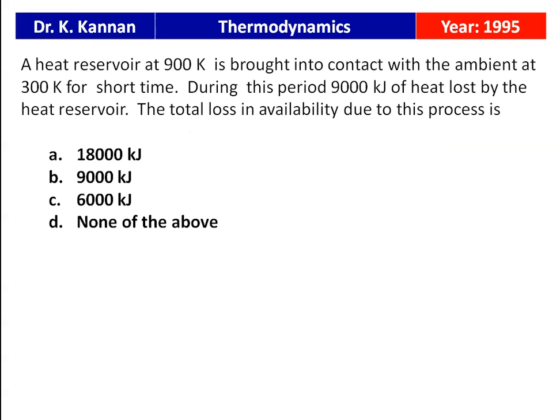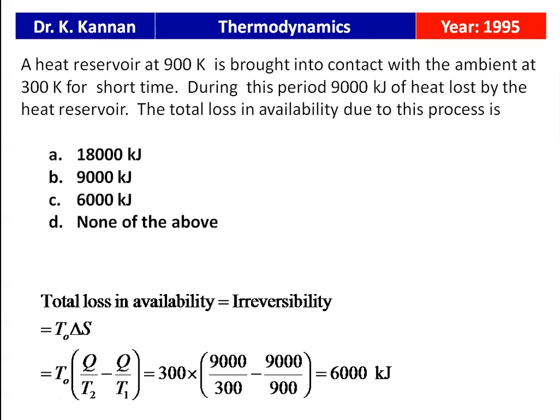From the 1995 question paper: a heat reservoir at 900 K is brought into contact with ambient at 300 K. During this period 9000 kJ of heat is lost by the reservoir. Total loss in availability (irreversibility) = T₀ × (Q/T2 − Q/T1) = 300 × (9000/300 − 9000/900) = 6000 kJ. The correct answer is 6000 kJ, option C.